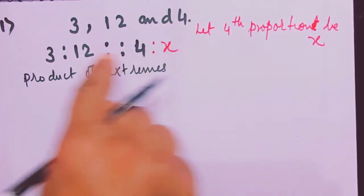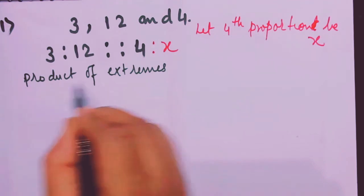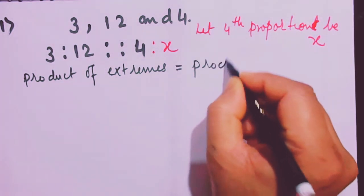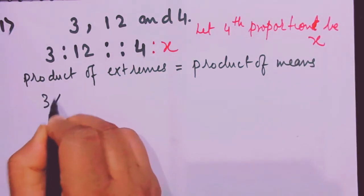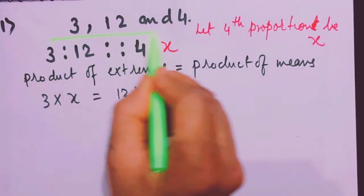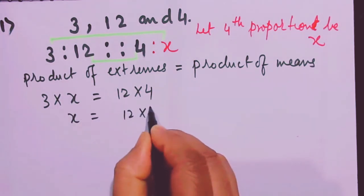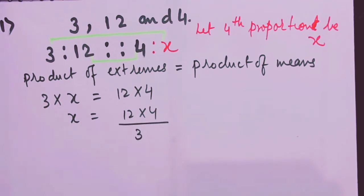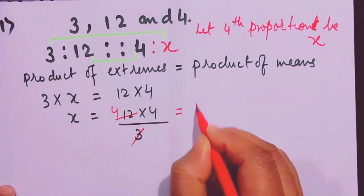Taking the extremes first makes it easier to move numbers from left to right. So, product of extremes equals product of means: 3 into X equals 12 into 4. Here, 3 and X are the extremes, while 12 and 4 are the means. Therefore, X equals 12 into 4 divided by 3. Cancelling gives 4 times 4 equals 16.